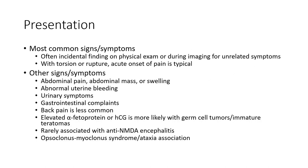Other signs and symptoms include abdominal pain, abdominal mass, abnormal uterine bleeding, urinary symptoms, gastrointestinal problems. Pelvic pain is less common. Elevated alpha-fetoprotein or hCG is more likely with germ cell tumor.